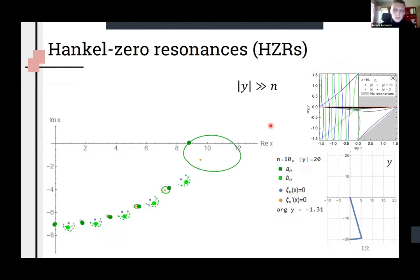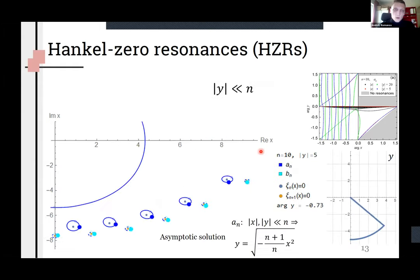Another type of resonances obtained here for large y and they are close to Hankel function or its derivative zero. Also you can see one asymptotic solution for small x and y. It is remarkable case, please remember this one.